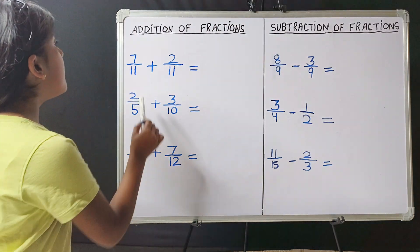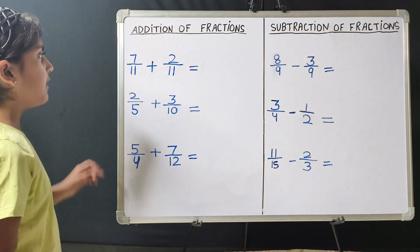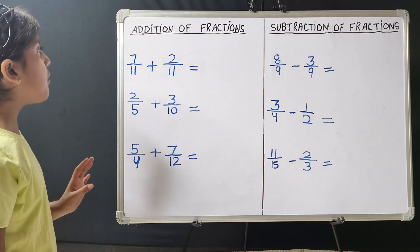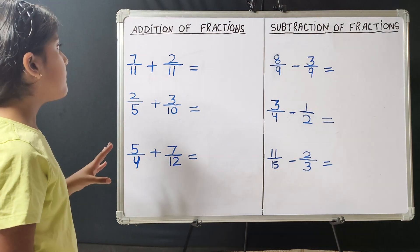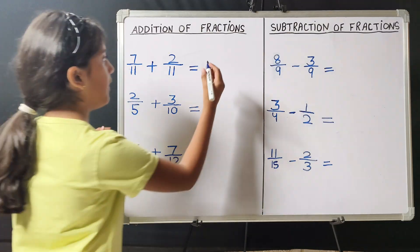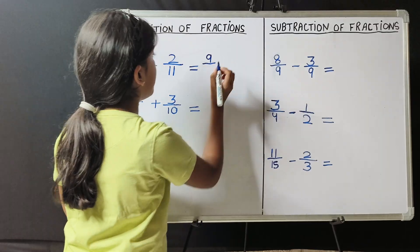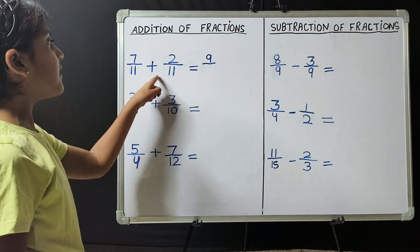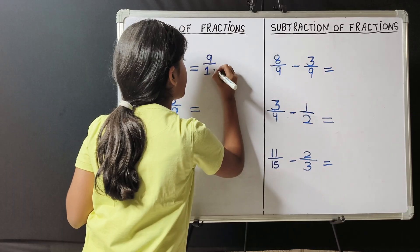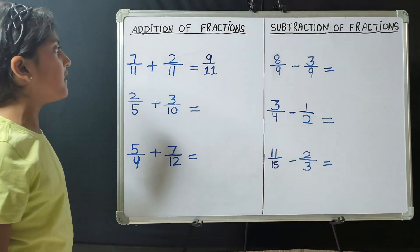For example, 7 upon 11 plus 2 upon 11. Here the denominators are the same — 11. So we will just add the numerators, 7 and 2. So 7 plus 2 is 9. We won't add 11, we will just write this 11 as it is. So 9 upon 11 is the answer.